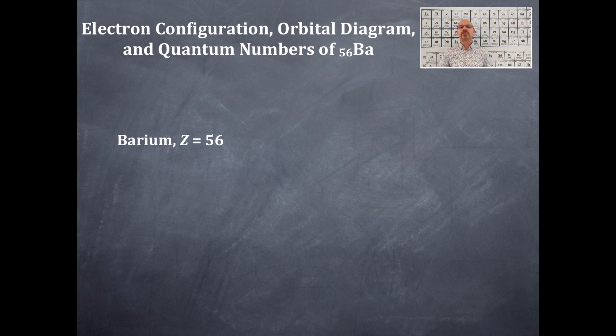So xenon is element number 54. So 54, 55, 56, you actually only need to count up 2. So you're going to have 54, that is xenon in brackets, and then thereafter you're going to count to 55 and 56 to get barium.